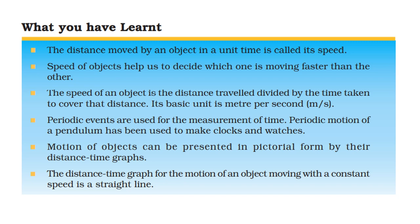So that is everything we learned today. The distance moved per unit time is called speed. The speed of an object is the distance traveled divided by the time taken; the basic unit is meter per second. Periodic events are used for measurement of time, and the periodic motion of a pendulum has been used to make clocks and watches. The motion of an object can be represented by a distance-time graph; for constant speed, the graph is a straight line. Hope you all understand — study hard. Thank you all!